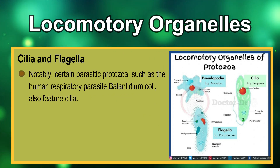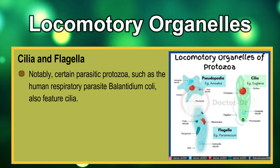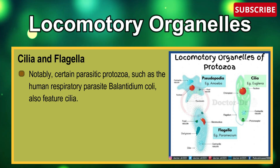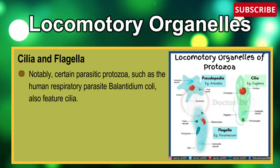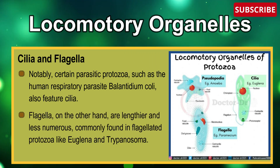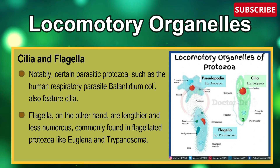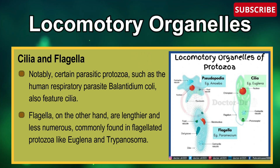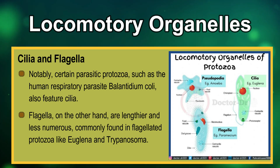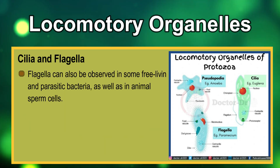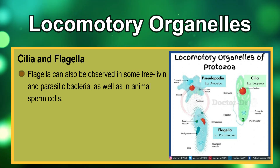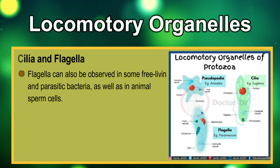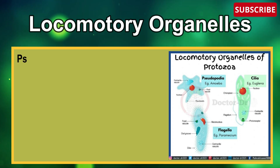Notably, certain parasitic protozoa such as the human respiratory parasite Balantidium coli also feature cilia. Flagella, on the other hand, are lengthier and less numerous, commonly found in flagellated protozoa like Euglena and Trypanosoma. Flagella can also be observed in some free-living and parasitic bacteria, as well as in animal sperm cells.